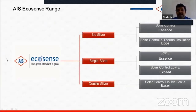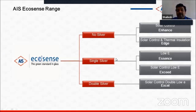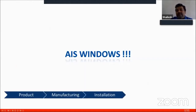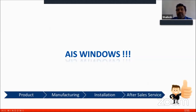In terms of product range, AIS offers high-performance soft-coat heat-reflective glasses in different categories: no-silver (solar control), single-silver (solar control low-E), and double-silver (solar control double low-E). Glass alone doesn't fulfill requirements unless used in the right frame — whether curtain glazing or windows. AIS has channel partners for curtain glazing and their own AIS Windows for the windows segment.